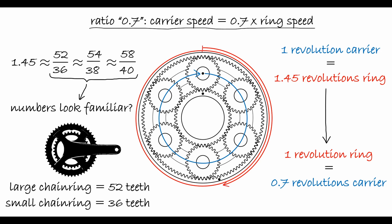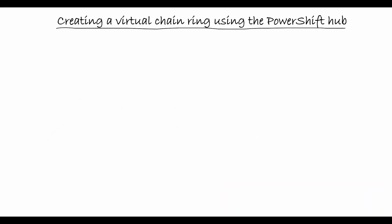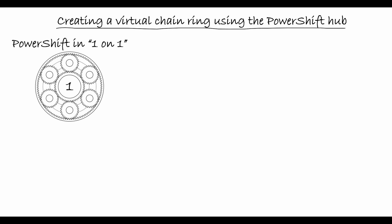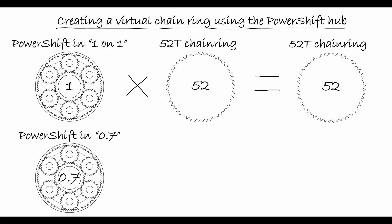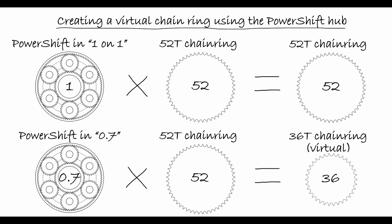Instead of actually mounting that second, smaller chain ring, the PowerShift Hub can be used to create that chain ring virtually. When the ring gear and planet carrier are coupled by the clutch mechanism, we say the PowerShift Hub is in its 1-on-1 ratio, and the chain ring effectively operates as a large chain ring. When instead, the clutch mechanism decouples the ring gear and planet carrier, the PowerShift Hub shifts in its so-called 0.7 ratio, which when multiplied with the tooth count of the large chain ring yields a virtual smaller chain ring, with, in this particular example, 36 teeth.